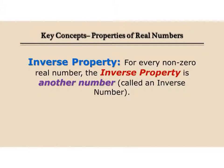The inverse property says for every non-zero real number, the inverse property is another number called the inverse number. We think of that as either being if it's a positive number, the inverse is negative, a negative number. It is another number called the inverse number.